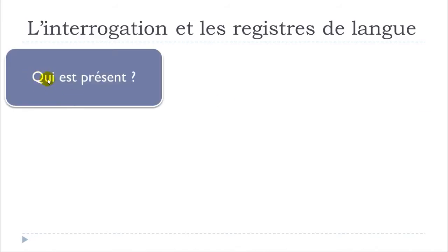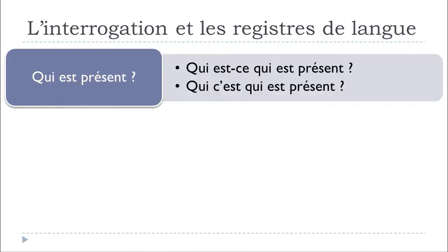The first question is 'Qui est présent?' — 'Who is present here?' — and this is a normal, formal way of asking a question. You start with 'Qui' (Who), 'est' (is), 'présent' (present here). The second, more common everyday option is 'Qui est-ce qui est présent?'